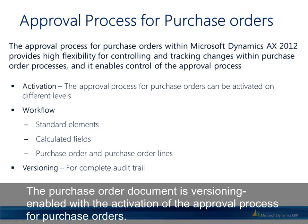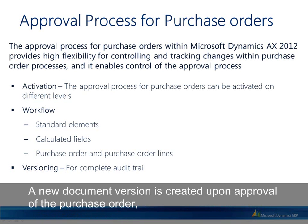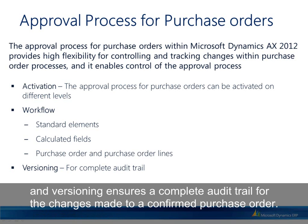The purchase order document is versioning enabled with the activation of the approval process for purchase orders. A new document version is created upon approval of the purchase order, and versioning ensures a complete audit trail for the changes made to a confirmed purchase order.